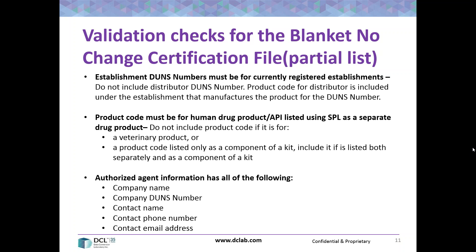So the manufacturer may be doing it for the distributor, but if the distributor wants to be sure, they can either speak to the manufacturer and get reassurance, ask for the blanket no change certification file that was submitted, or they can do it themselves. For national distributors — we have clients who are manufacturers for them — the national distributors are instructing their manufacturers that they will do all the SPL work for them. But from our own experience with clients, distributors are often doing it on their own.